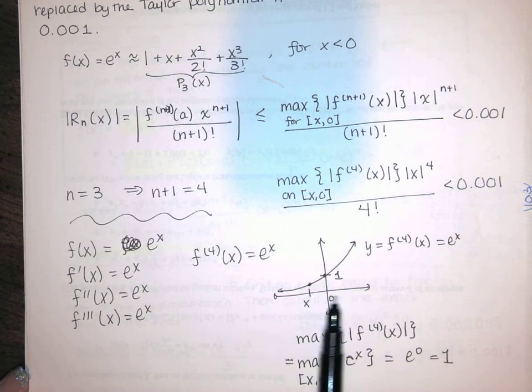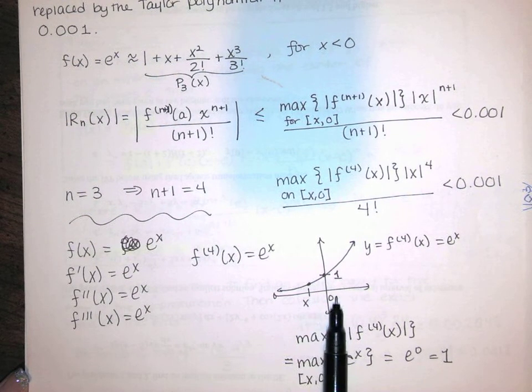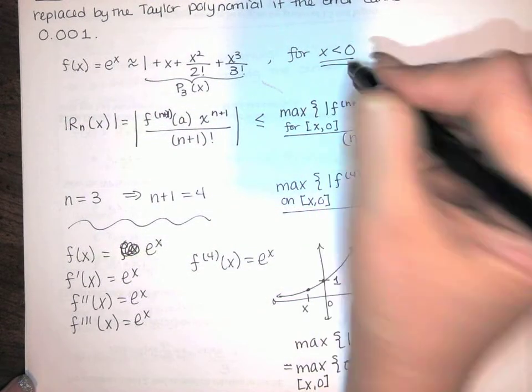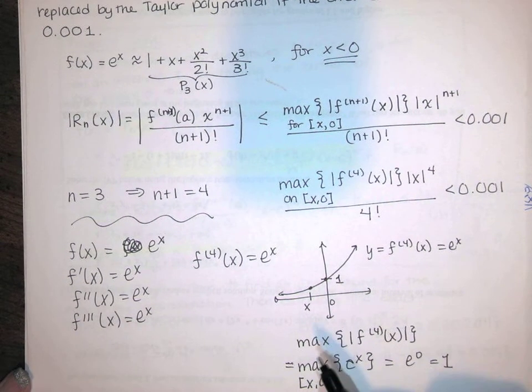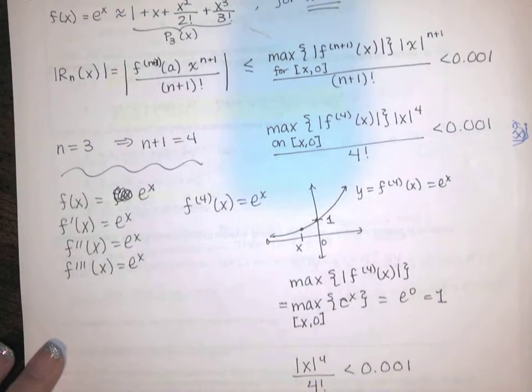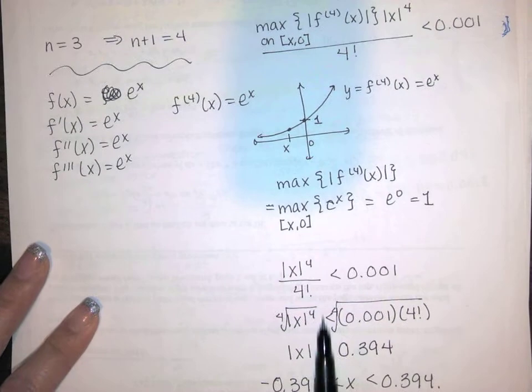And fortunately it was e to the x, and we know that's increasing. And so the maximum value was 1 on the interval from x to 0 because we were told, and we had to be told this, that x was negative. So we got that was less than 1, and that was enough to say that this is less than that, and we just solved the inequality for x. Very simple.